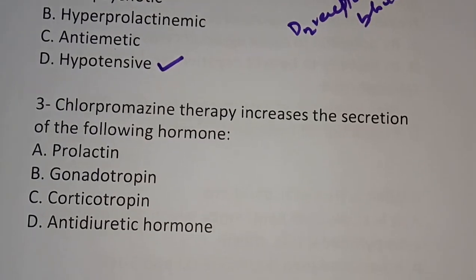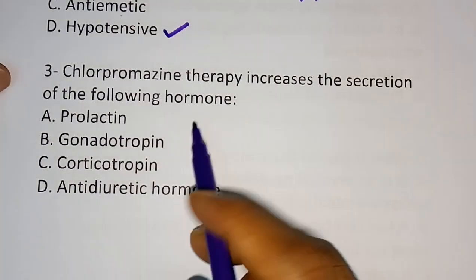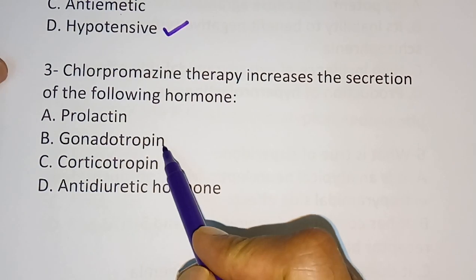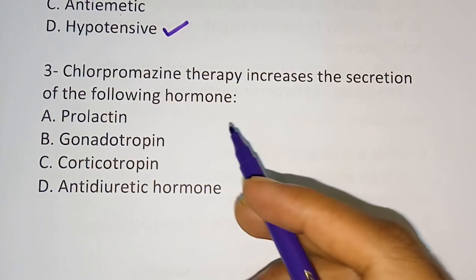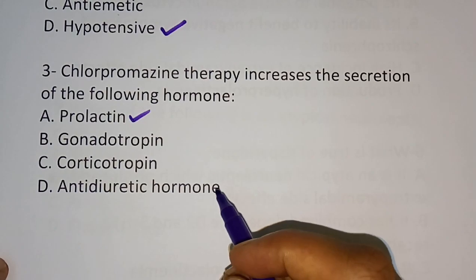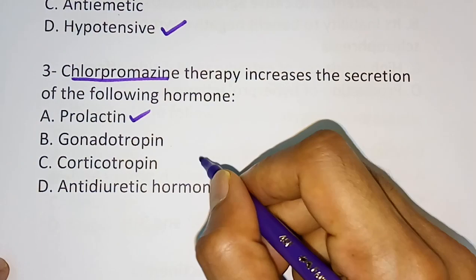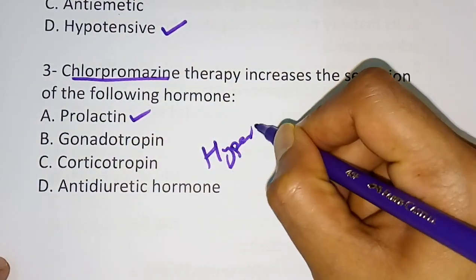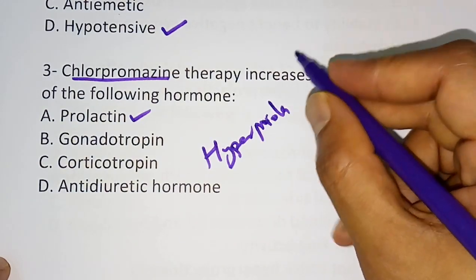Question 3: Chlorpromazine therapy increases the secretion of which hormone? Options are: prolactin, gonadotropin, corticotropin, antidiuretic hormone (ADH). The correct answer is option A, prolactin. Chlorpromazine causes hyperprolactinemia — it will increase the secretion of prolactin. This was already discussed in the first question.